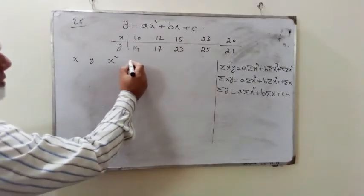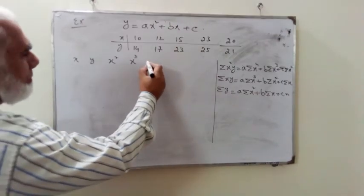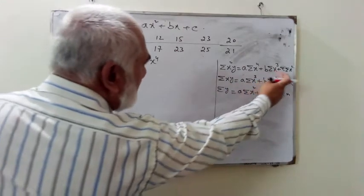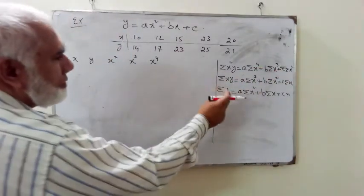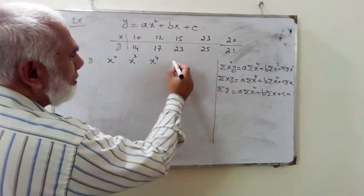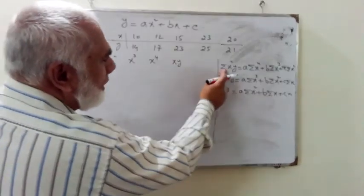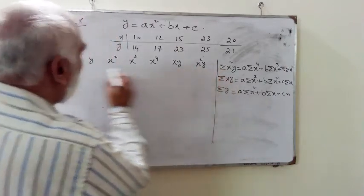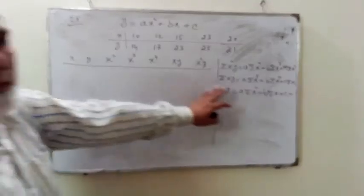Then we take the square of x, cube of x, and x power 4. We also require x², and x²—and x²—then we also require xy, the product of these two, and we also require x²y. So these are the different heads under which we have to place the values, and these are the values we are going to use them into your normal set of equations.